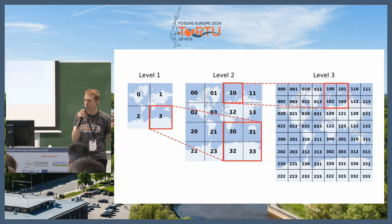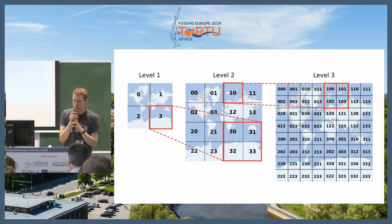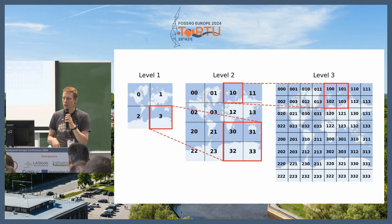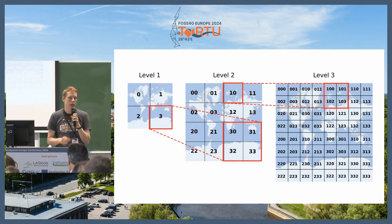You can use XYZ for the zoom, but you can also use quad keys, which is the same principle but you don't need three variables. You just count 0, 1, 2, 3, and then on the second level you do the same. Depending on the zoom level, the quad key gets bigger, and you have one single identifier for each tile in the world.